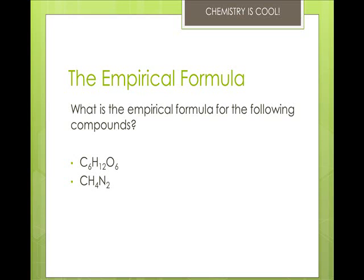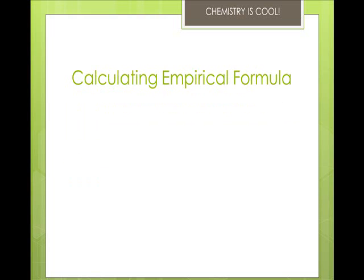Remember, you're just finding the lowest whole number ratios of the atoms in a compound. It's like finding the lowest common denominator. On the examples on this slide, C6H12O6 has an empirical formula of CH2O. However, CH4N2 is both the empirical and molecular formula. It's not just the ratio of the atoms, but it's also the ratio of the moles of these atoms, and that becomes important when you are calculating the empirical formula.